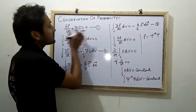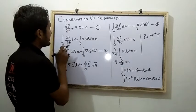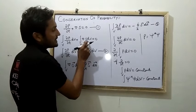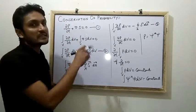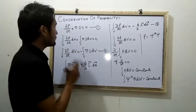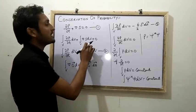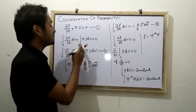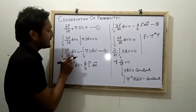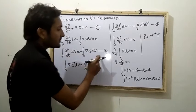We integrate both sides of this equation with respect to volume, so we can write: integration of del p upon del t dv plus del dot S dv equals zero. Rearranging, del p upon del t dv equals minus del dot S dv. This is known as equation two.